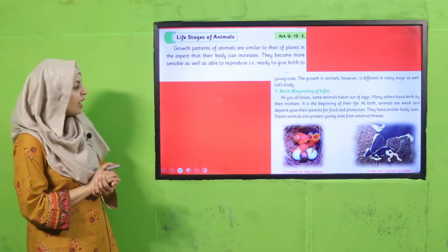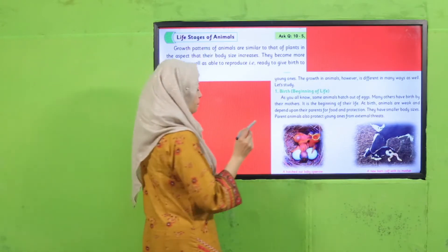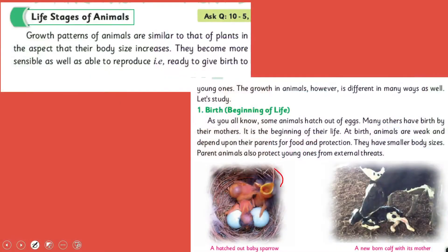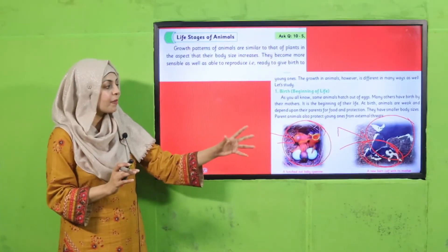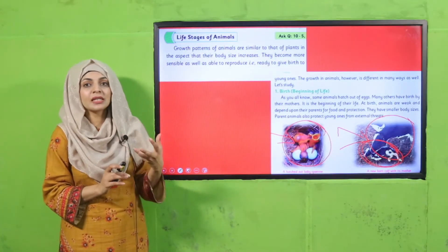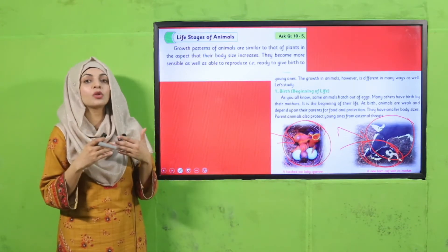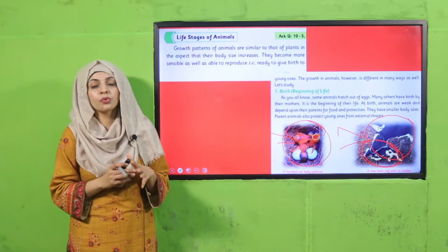I hope everybody has opened the page. First, look at the pictures here. A hatched baby sparrow — this is how it looks; this is the beginning of life. You can see that the baby cow and adult cow look quite similar and also different — similar in form but different in their sizes. Now let's quickly move towards the reading.